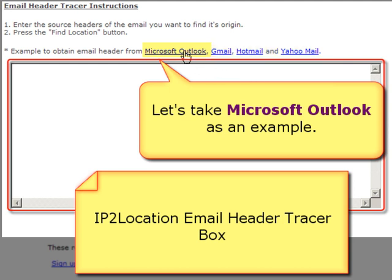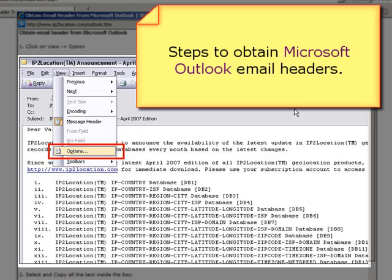We will use Microsoft Outlook as an example to demonstrate. A new small window will pop up showing how to obtain the email header to trace the origin location.